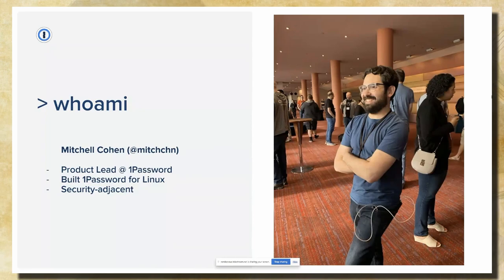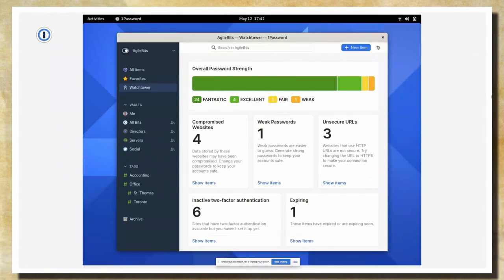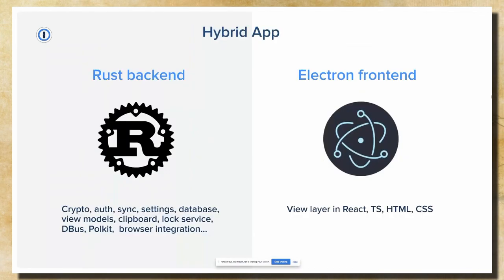A bit about 1Password for Linux: it's our newest app. It's beautiful, it's fast, it has so many features and it just came out yesterday. From an architecture standpoint, it's a pretty fascinating app — we call it a hybrid app because it's got two halves. One half is a backend that's entirely native, written in Rust, and does all the serious business logic. The front end is written in Electron and serves as our view layer using the web stack.